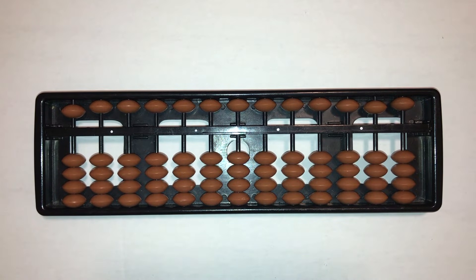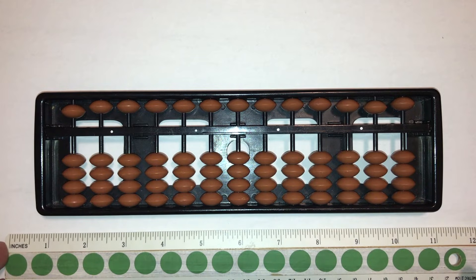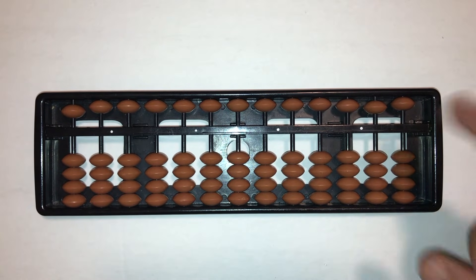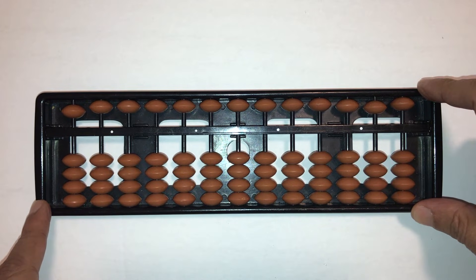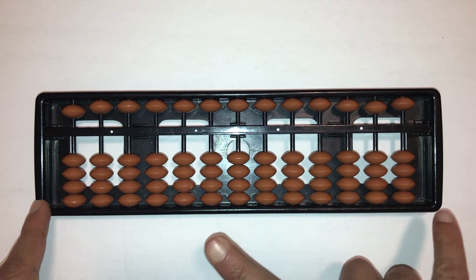Now let's talk about the size of the abacus. You want an abacus that's about 10 inches in length and has 13 columns. We find this to be an ideal size for both children and adults.